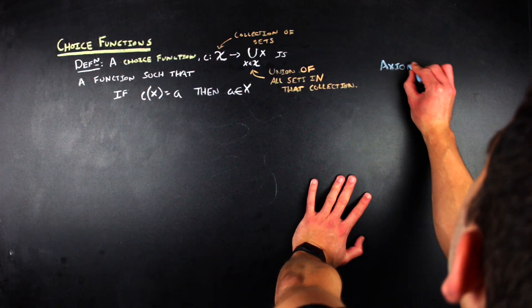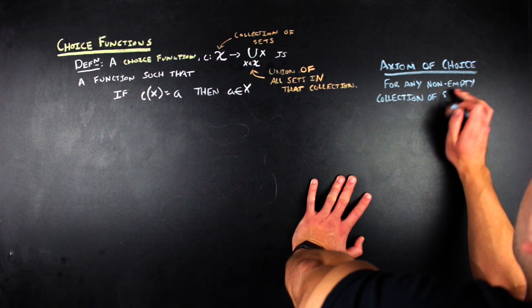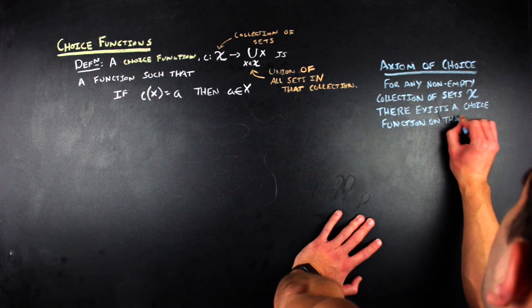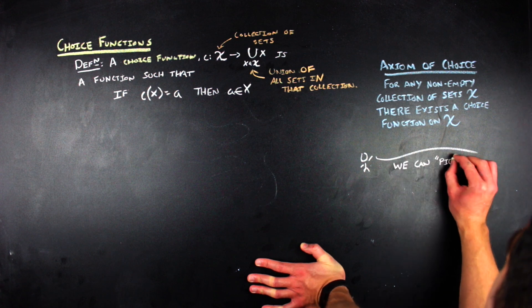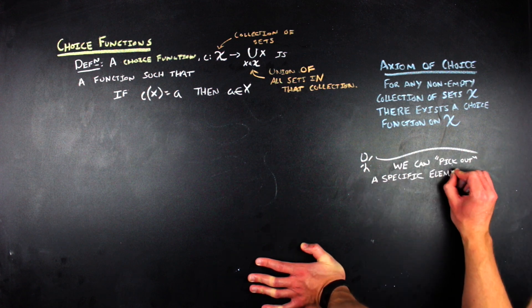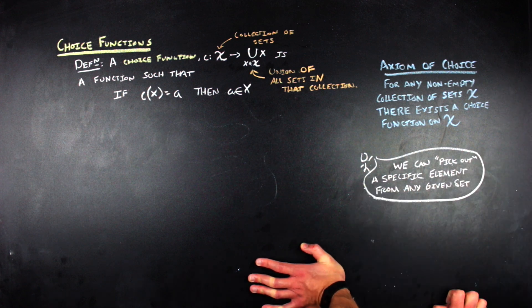With that, it's natural to ask: does every collection of sets have a choice function? The answer to that question is only if you want it to. That's where the axiom of choice comes in — we postulate this as a fact. The axiom of choice says that every collection of sets has a choice function defined on it, meaning that for any given set we can pick out a particular element of that set when we want to.